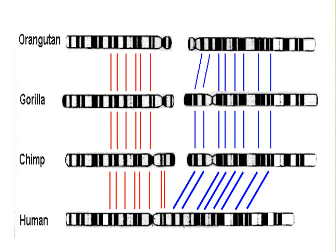So while the banding patterns of the chromosomes themselves may be similar, and there's a clear fusion of the human chromosome number 2, this doesn't necessarily support the argument, by itself at least, that humans and apes must therefore share a common evolutionary ancestor.